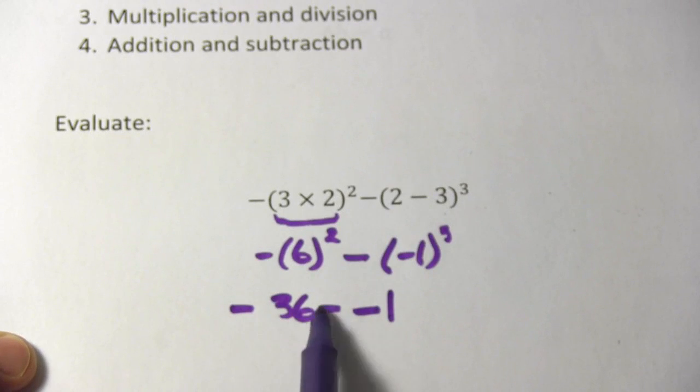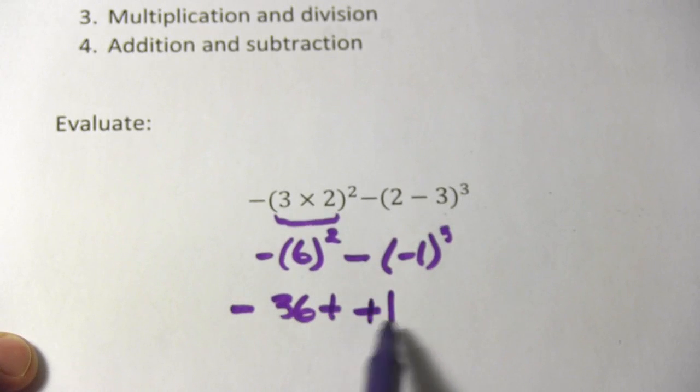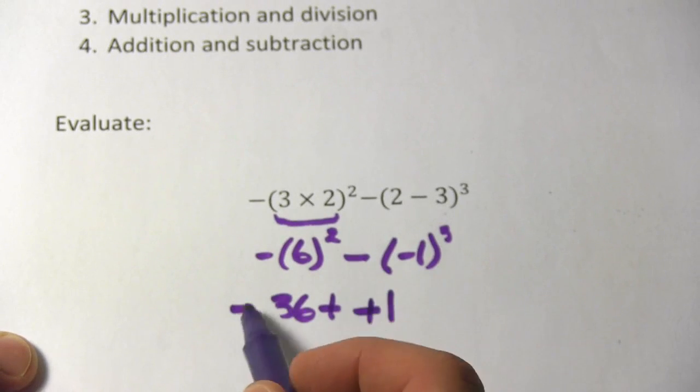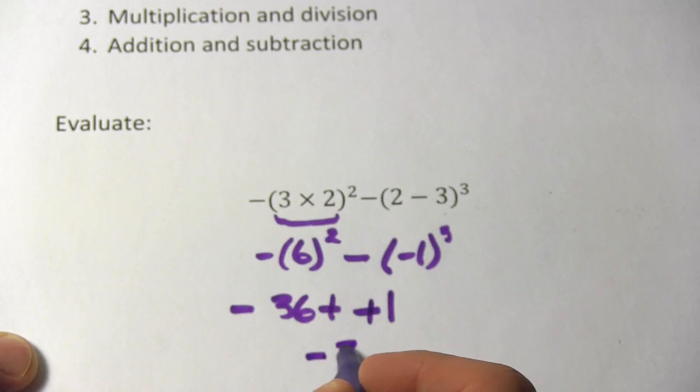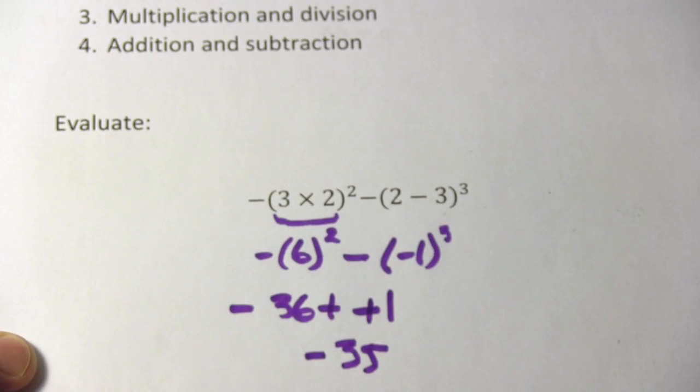So we have negative 36 minus a negative 1, when I have two negative signs in a row they become a plus sign, so negative 36 plus 1 that's negative 35, and that's our answer on that one.